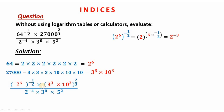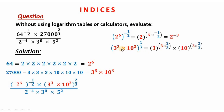The same applies to the second bracket. Since we have multiplication, the power 3 is multiplied by the overall power 2 over 3, giving 3 times 2 over 3. Similarly for 10, we have 3 times 2 over 3 again. This simplifies to 3 power 2 times 10 power 2.